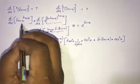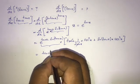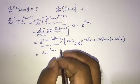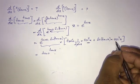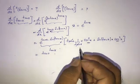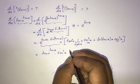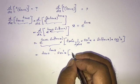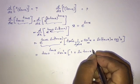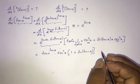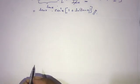Now tan x cancels, and we recognize e to the power of tan x times ln of tan x equals tan x to the tan x. Factoring out sec squared x, the final answer for the first question is tan x to the tan x, times sec squared x, times the quantity 1 plus ln of tan x.